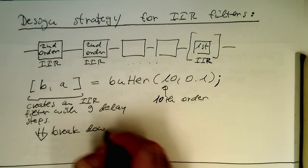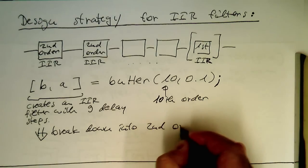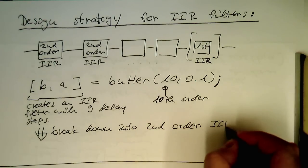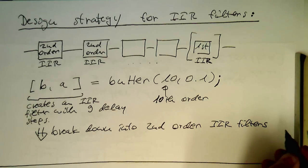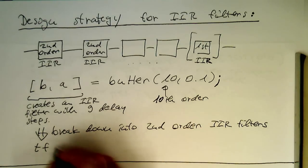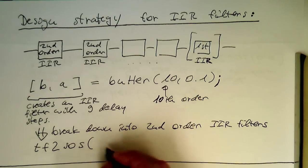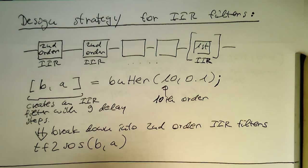Break down into second order IIR filters. And there's a command called TF2SOS and essentially we just put the B, A in it. And then this gives us second order filter coefficients back.